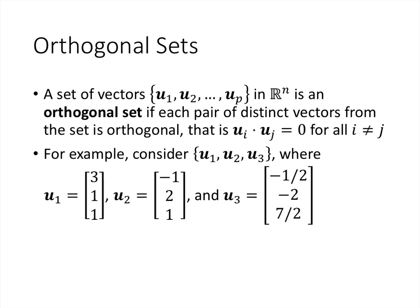When we have an entire set of vectors, we can say that it is an orthogonal set if every time we take two distinct vectors out of that set and take their inner product, what we get is 0. In other words, the vectors in the set are pairwise orthogonal — every pair of the vectors in the set is an orthogonal pair.